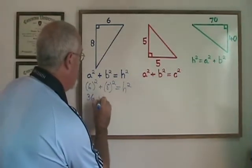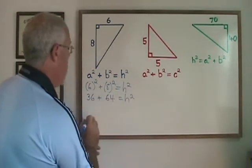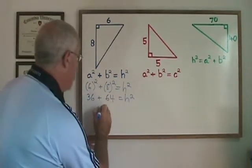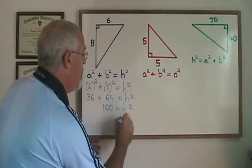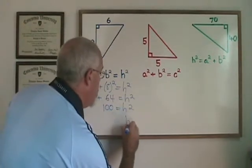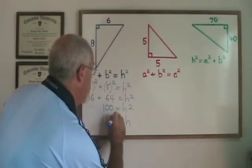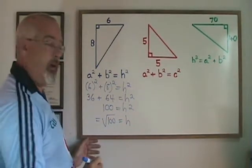Six squared is 36. Eight squared is 64. 36 + 64 = 100. If h² equals 100, then h is equal to the square root of 100, and the square root of 100 is 10.